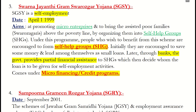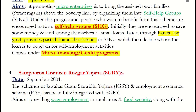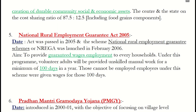This scheme comes under micro-financing or credit programs — pay attention to these two points as they are also covered in Chapter 6. Fourth, Sampoorna Grameen Rozgar Yojana, launched in September 2001, aims at providing wage employment in rural areas and food security. It is again on a cost-sharing basis at a ratio of 87.5:12.5.